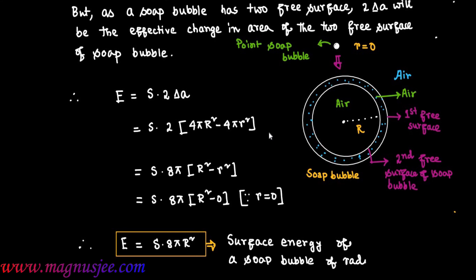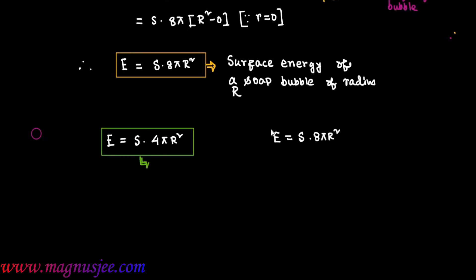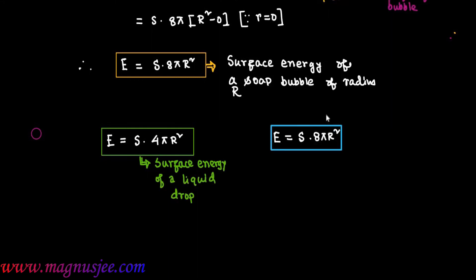When a soap bubble of radius capital R is formed, we assume it is blown from a point soap bubble to radius capital R. To summarize: E equals S dot 4πR² is the surface energy of a liquid drop, whereas E equals S dot 8πR² is the surface energy of a soap bubble.